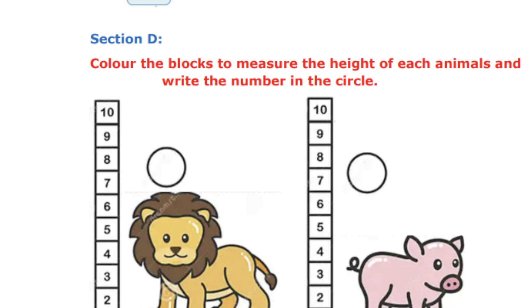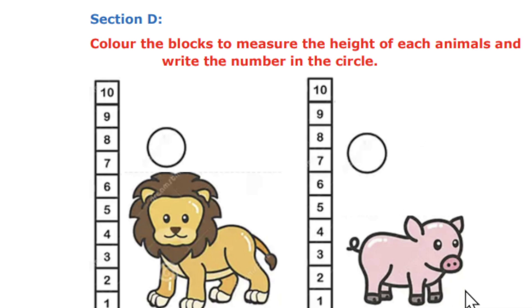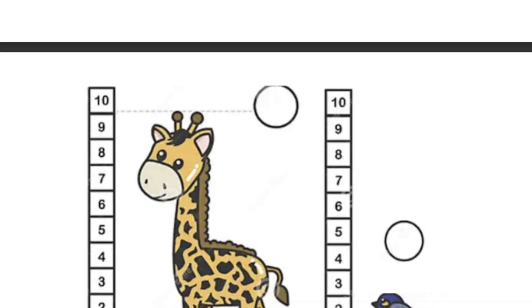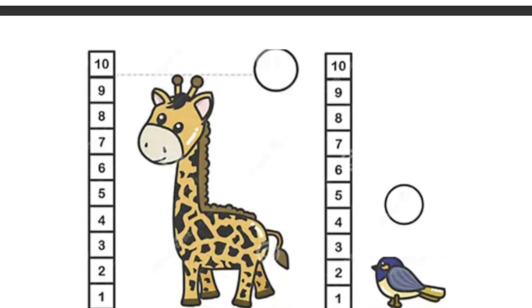For example, lion, you have to measure the height of the lion and color till that block. And then you have to write the answer in the circle. Likewise, you have to do for pig, you have to do for giraffe and you have to do for a sparrow also.